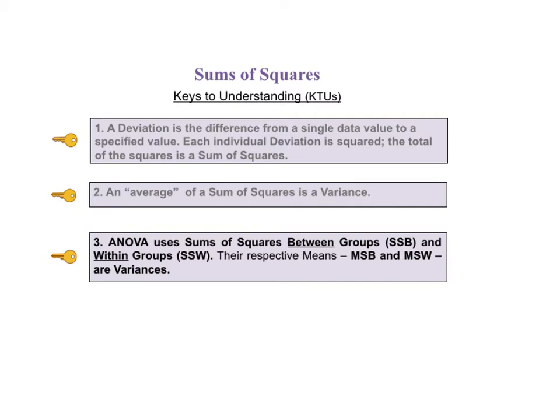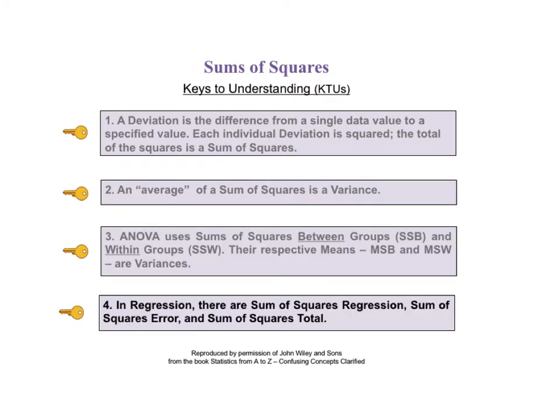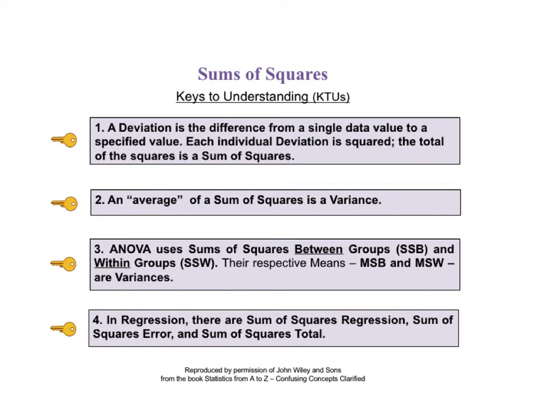The third key says ANOVA uses sum of squares between groups, SSB, and within groups, SSW. Their respective means, MSB and MSW are variances. The fourth KTU states, in regression, there are sums of squares regression, sum of squares error, and sum of squares total. And here on one page are the four Keys to Understanding the concept of sum of squares. You may wish to pause the video to read them all together.